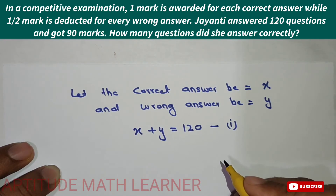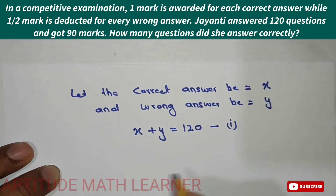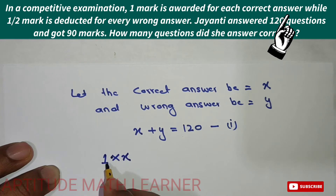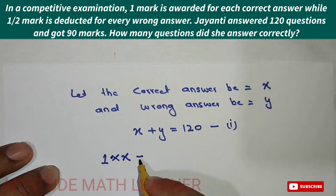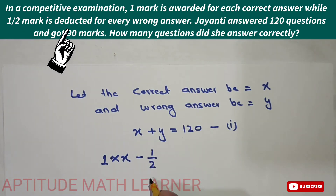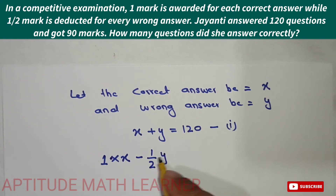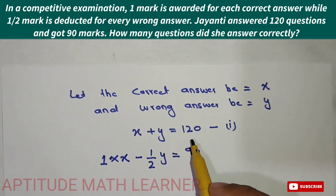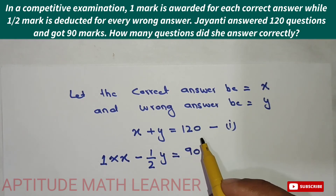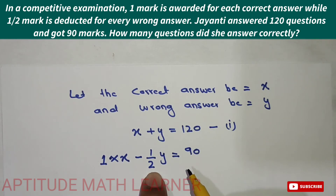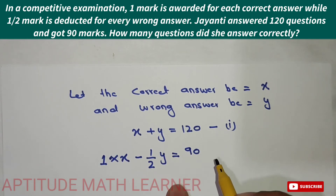Now for Equation 2: one mark is awarded for each correct answer, so we have 1 multiplied by x, which is x. Half mark is deducted for every wrong answer, so we subtract one-half multiplied by y. She scored 90 marks total, so x minus one-half y equals 90. This is Equation 2.